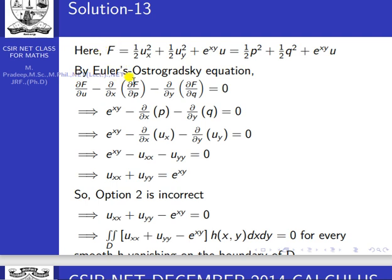By the Euler-Ostrogradsky equation: ∂F/∂u − (∂/∂x)(∂F/∂p) − (∂/∂y)(∂F/∂q) = 0.